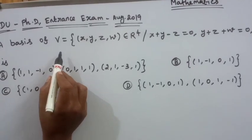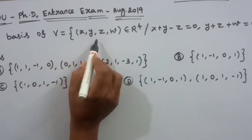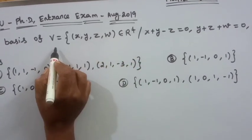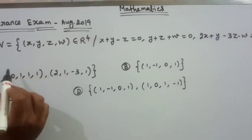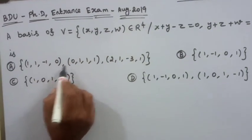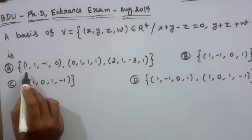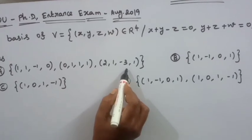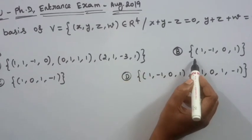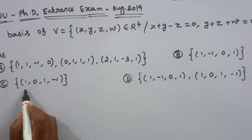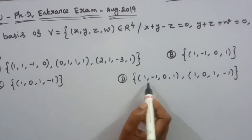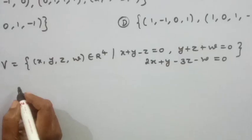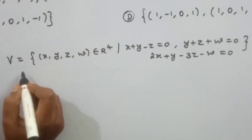and 2x + y - 3z - w = 0. We are asked to find a basis of this vector space V, which is a subspace of R4. The answer options include sets of vectors such as {(1,1,-1,0), (0,1,1,1)}, {(2,1,3,1)}, {(1,0,1,...)}, and others.